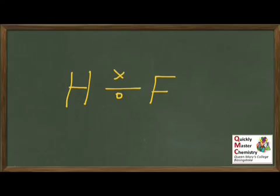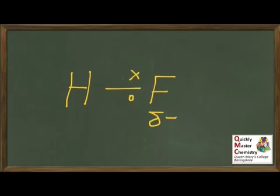It turns out that the fluorine is significantly more electronegative than the hydrogen. Going back to the definition, that means that the fluorine has a stronger tendency to attract the electrons in a covalent bond towards itself than hydrogen does. As a result, it would be more accurate to draw our shared pair of electrons with the electrons much closer to the fluorine than to the hydrogen. The result is that fluorine has, to a certain extent, gained an electron from the hydrogen, giving it a partial negative charge. Likewise, the hydrogen has, to some extent, lost its electron to the fluorine, giving it a partial positive charge.